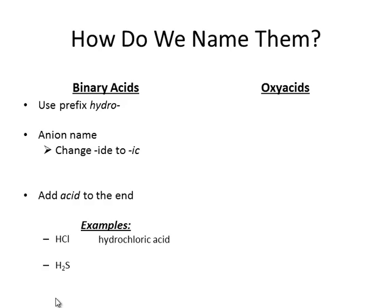H2S — the H tells us it's an acid. Being that there's only one other atom with the hydrogen, it has to be a binary acid. So we start with 'hydro.' Sulfide becomes sulfic, but in the case of sulfur we add the -ur back in, so we get 'sulfuric.' The full name is hydrosulfuric acid.